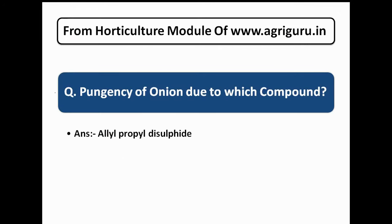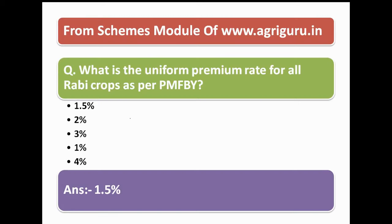The second question is from the horticulture module of agriguru.in. The question is: pungency of onion is due to which compound? The answer is allyl propyl disulfide. The third question is from the schemes module of agriguru.in.